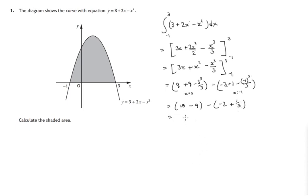So 18 minus 9 is 9, taking away negative 2, adding 2, taking away 1 third. So we've got 11 minus 1 third, which gives us 10 and 2 thirds. And the shaded area is actually equal to that, because all of this is above the x axis. So the shaded area is equal to 10 and 2 thirds units squared.